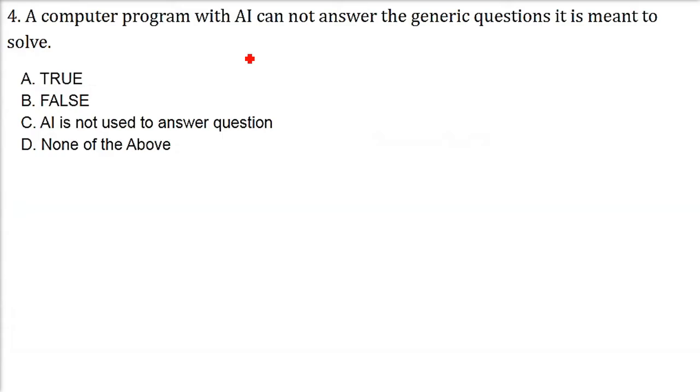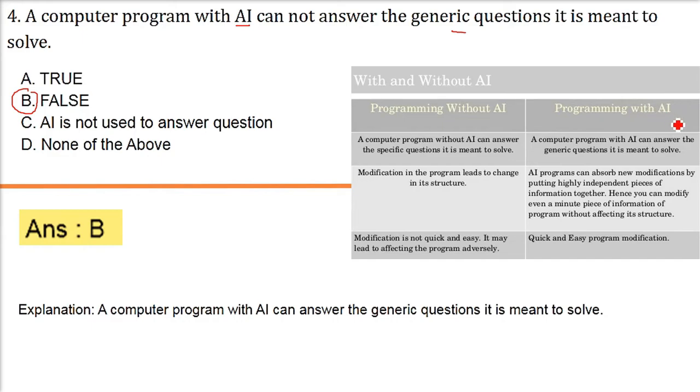Computer program with AI cannot answer the generic questions it is meant to solve. So we are making a computer program with AI and we are trying to solve a generic question. That is, a naive, a basic question, like where are you going, what are you eating. So the answer here is false. It can answer. Cannot is false. So here is the difference of programming without AI and programming with AI. A computer program with AI can answer the generic questions it is meant to solve. It can be easy question, it can be complicated, it can be complex. It is able to solve it.